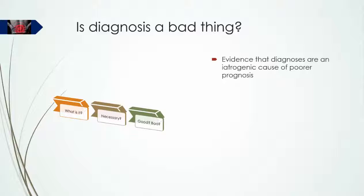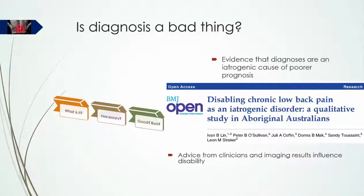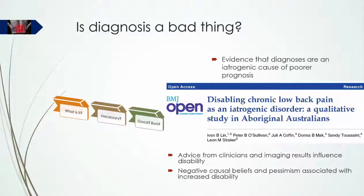Now we must address the question as to the relative pros and cons of providing a diagnosis. This discussion is not intended to be comprehensive, but to simply acknowledge the fact that knowing the source and cause of disease is not always helpful for the patient. I am definitely not in favour of wilfully withholding information, but I am aware of the powerful impact the words of a respected healthcare provider can have for good or ill. There is evidence that providing patients with a diagnostic label is an iatrogenic cause of a poor prognosis. Lynn et al. have found that, in certain settings, advice from clinicians and the results of imaging negatively influence disability in patients with back pain. Diagnosis and clinical information seems to result in negative beliefs about the cause of pain that results in increased pessimism associated with disability.